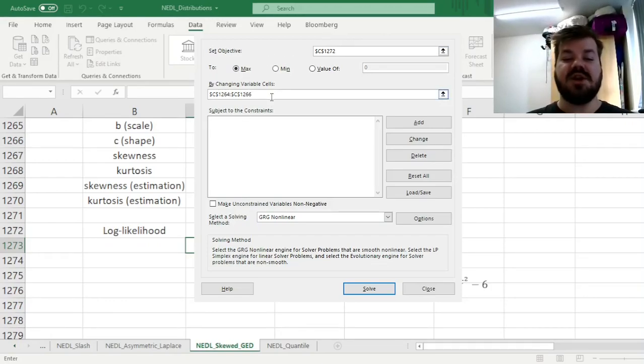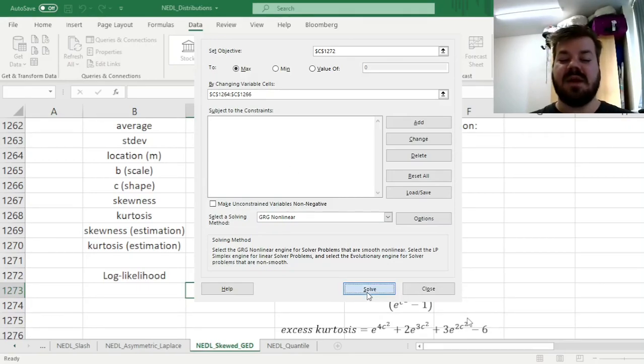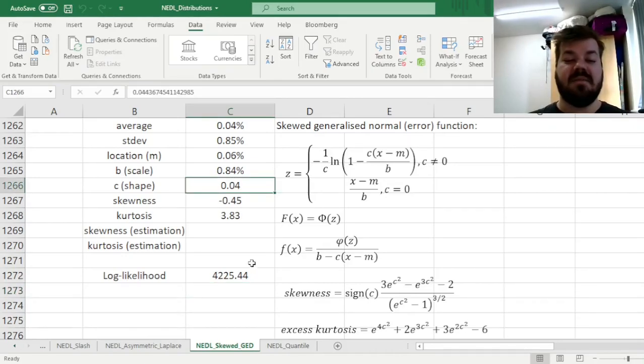We need our objective function in cell C1272, which is our log-likelihood over here, to be maximized by changing the variable cells with parameter values, with parameter values for location, scale, and shape parameters, so those three cells. We can use gradient descent for this particular task, and we don't need to tick this box, we can allow some of our parameter values, namely location and shape, to be negative, so we untick that. And we can be certain that convergence will be achieved, simply because we have enabled smooth convergence by using the IFERROR function in the log-likelihood function. So now we can click solve, and wait until the algorithm converges to the optimal value, and it has just done that.